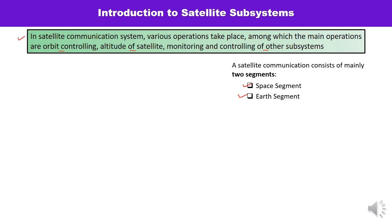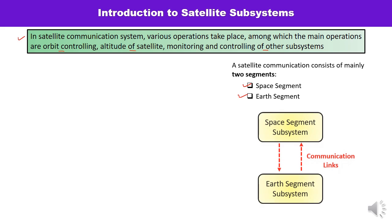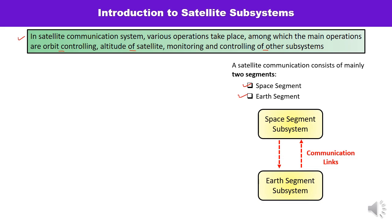Other space segment components include launch vehicles. When we are talking about the Earth segment, which is also known as the ground segment, it means transmitting equipment, receiving equipment, and antenna system.